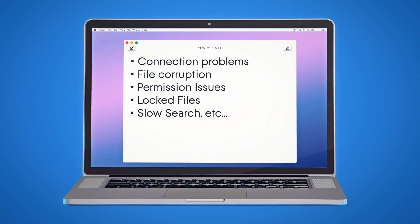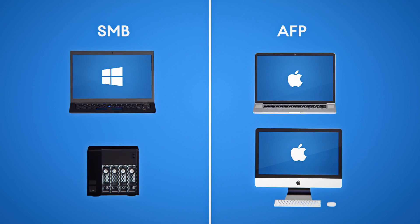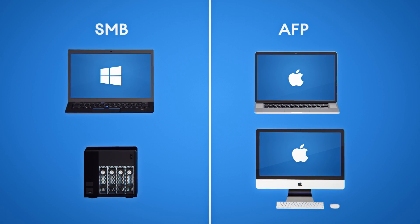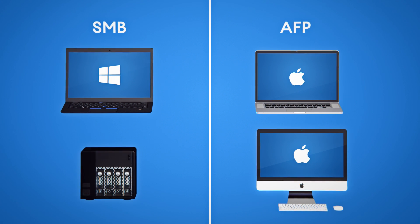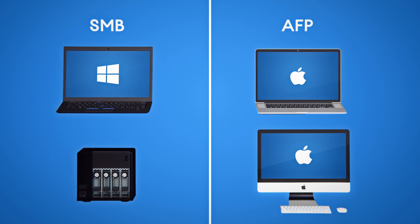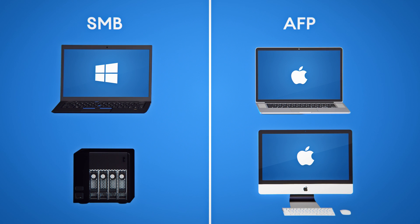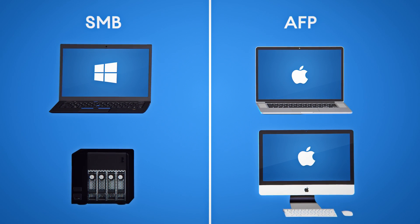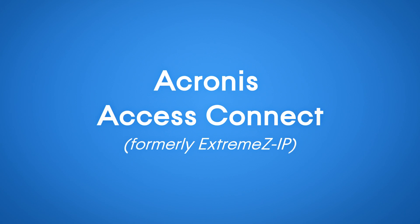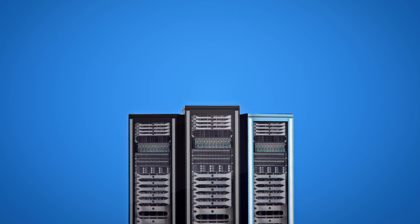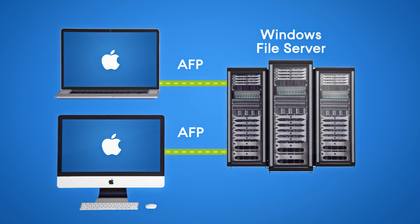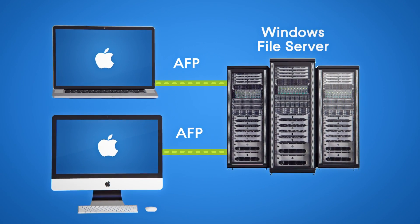Why? Because Windows and NAS servers use the Server Messaging Block, or SMB Network Protocol, rather than the Apple Filing Protocol, AFP. But now there's a simple way to eliminate compatibility problems once and for all: Acronis Access Connect. Install it on a Windows Server, and let Macs easily connect over AFP.